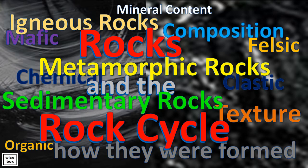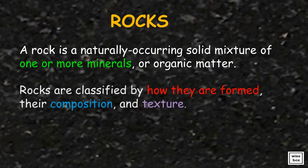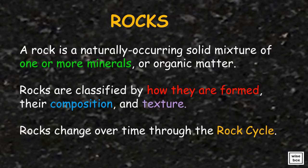Rocks: types of rocks and the rock cycle. A rock is a naturally occurring solid mixture of one or more minerals or organic matter. Rocks are classified by how they are formed, their composition, and texture.